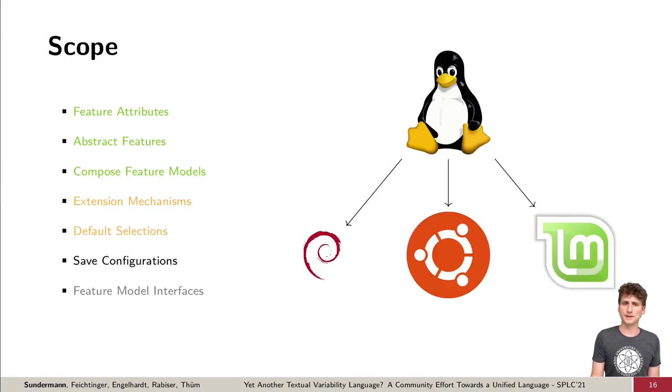It may make sense to store certain configurations, like for example, popular Linux distributions in the variability model. However, most participants would not include this concept in the initial version, so we excluded it.